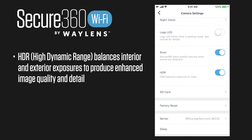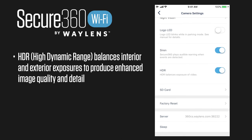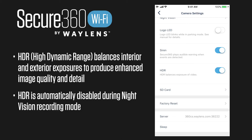The next option is HDR, which stands for high dynamic range. It balances the interior and exterior exposure so you have a good balance between bright sunlight outside and dark shadows inside your car. It's not the best for every situation, so if it's dark or a cloudy day you may want to try turning it off. HDR is disabled for night vision recording.